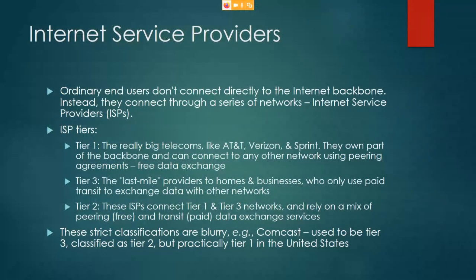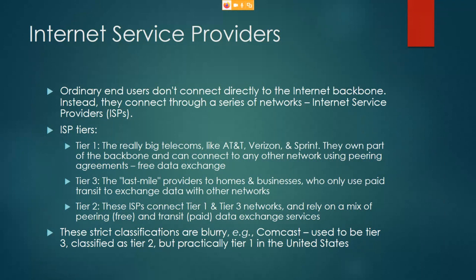Ordinary end users don't connect directly to the internet backbone — we go through an Internet Service Provider, or ISP. There are three tiers. Tier one — the really big telecoms like AT&T, Verizon, and Sprint — own chunks of the backbone and connect to any other network using peering agreements, which means free data exchange. So if AT&T sends data to Verizon, Verizon doesn't charge AT&T for it, and vice versa.